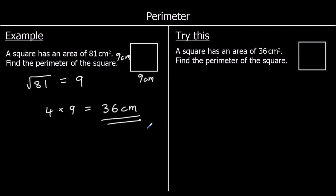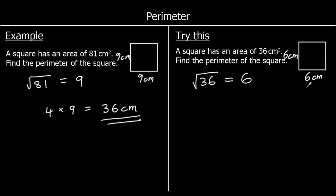And one for you to try. The square this time has an area of 36 centimeters squared. If we square root 36, we get six. That means six times six makes 36. So every length of the square is six centimeters, because the area of a square is the length of the side multiplied by itself. The perimeter is four sides — so four sixes — which is 24 centimeters. So the length all the way around the edge of the square is 24 centimeters.